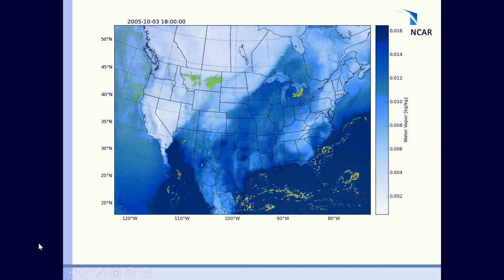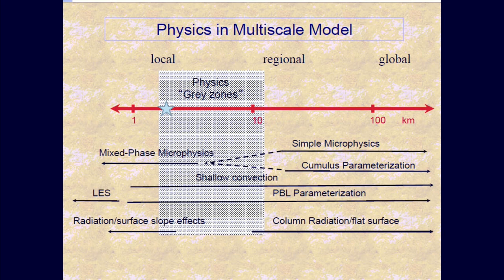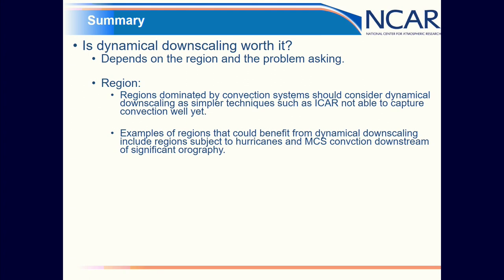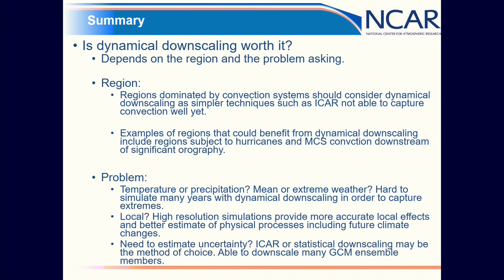We can't afford to run 100 ensemble members, but that's for the next generation of students in the next 10 years. So, is it worth it? I think it is. Going from simple microphysics and cumulus parameterizations to resolved physics definitely provides better information. It depends on the problem and region — if you have regions dominated by convection, you need to think about doing this. For policy decisions, you might want to use a hybrid model such as ICAR — Intermediate Complexity Atmospheric Research model — for downscaling. Thank you.